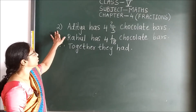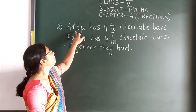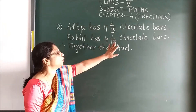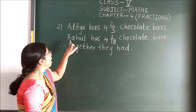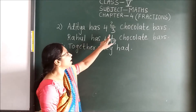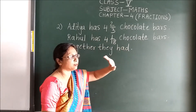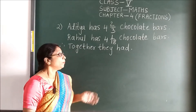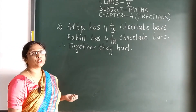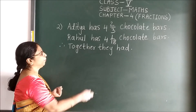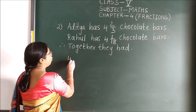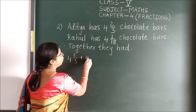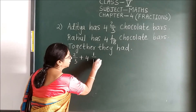Now the second word problem. Aditya has 4 and 2/3 chocolate bars. Rahul has 4 and 1/18 chocolate bars. We need to find how many chocolate bars they have together, so we add: 4 and 2/3 plus 4 and 1/18.